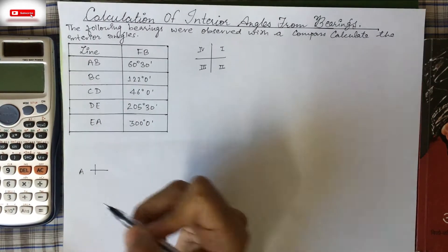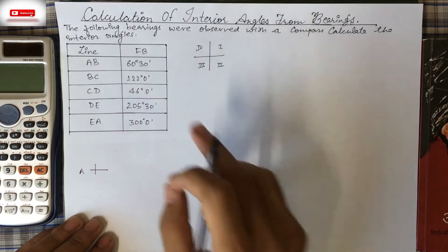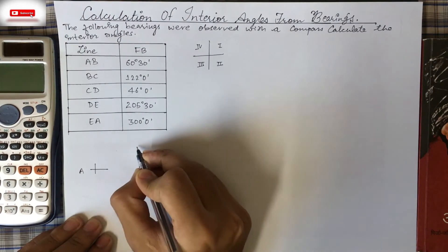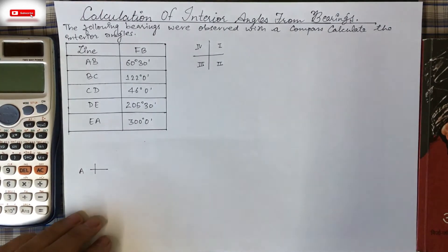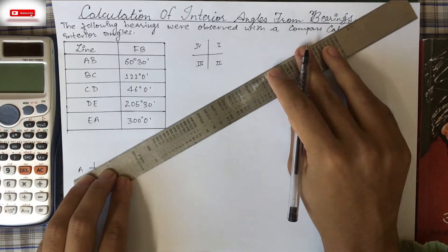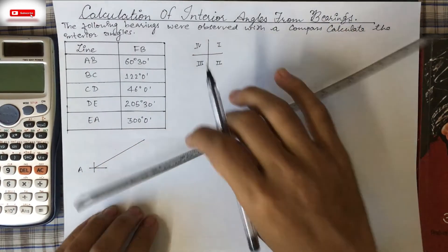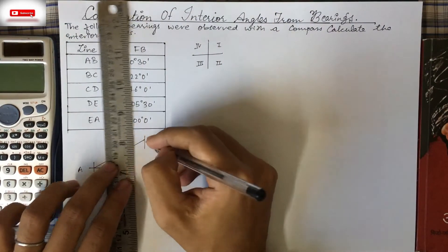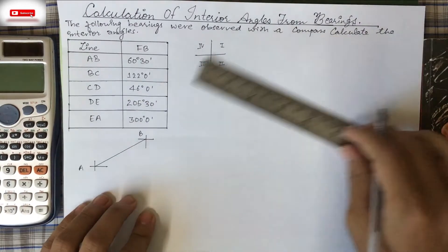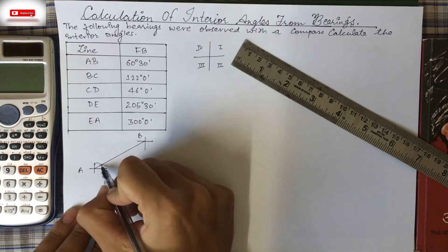Starting at point A, from A to B the bearing is 60°30', which falls in the first quadrant — between 0° and 90°, close to 45°. We draw the line accordingly. You can use a protractor to get the correct figure; right now I'm using just a scale. This gives us point B.